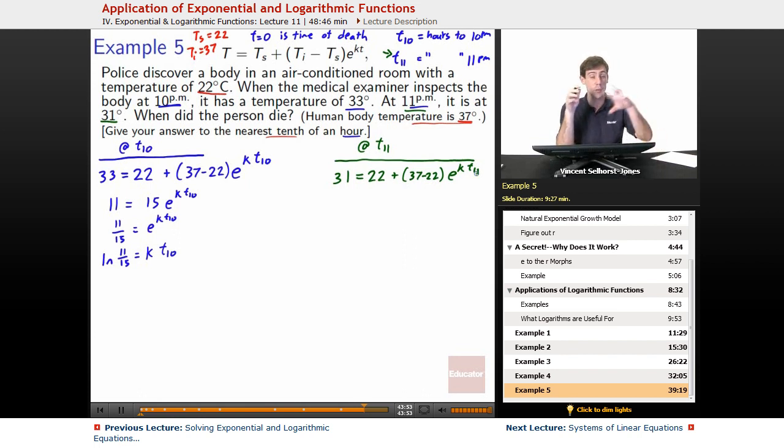So t_11, once again, I want to just point out, it's not time equals 11, it's definitely not that, it's just we named this thing hours to 10 p.m. as t_10, hours to 11 p.m. as t_11. They could be 1 and 2, they could be 5 and 6, they could be 80 and 81, we don't know yet. We just came up with names for these things, so we could start working things out. We can subtract by 22 on both sides, we'll get 9 equals 15 e^(k t_11). We can divide by the 15, so we get 9/15 equals e^(k t_11). Take the natural log of both sides, ln(9/15) equals k t_11.